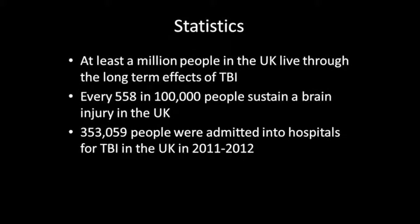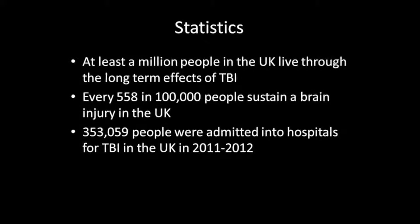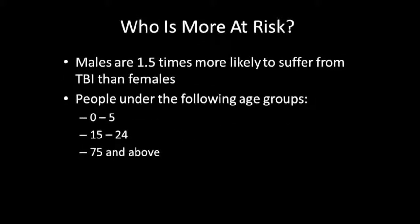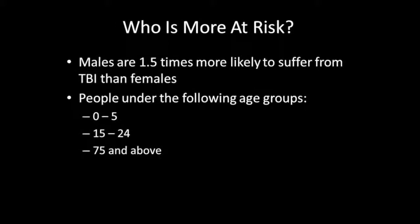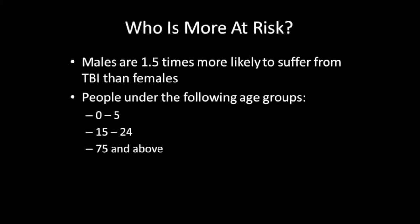In 2011 to 2012, over 350,000 people were admitted into hospital for TBI. Males are 1.5 times more susceptible to TBI than females. The age groups which are more at risk of contracting TBI are those from 0 to 5 years old, 15 to 24 years old, and the elderly who are 75 years and above.